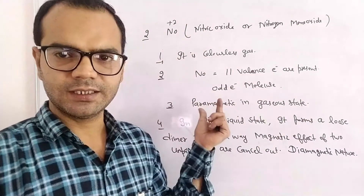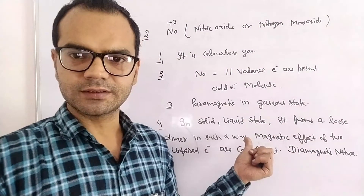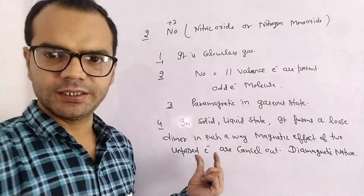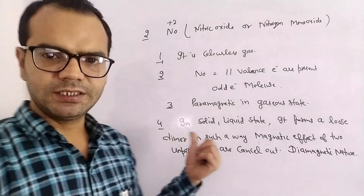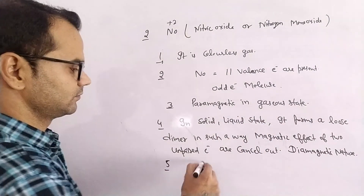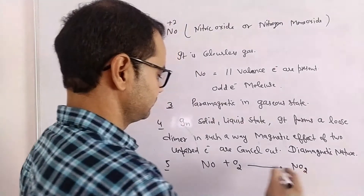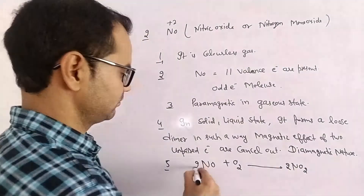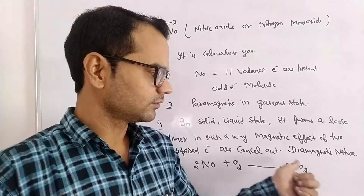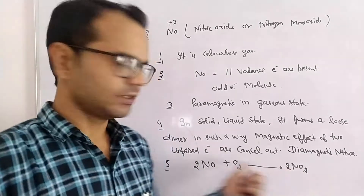So in the gaseous state it is paramagnetic, but in the solid and liquid state it is diamagnetic, because it forms a loose dimer resulting in the cancellation of the magnetic effect of two unpaired electrons. Fifth property: it readily reacts with oxygen to form brown fumes of nitrogen dioxide. NO₂ is a brown colored gas, so brown fumes are observed during the reaction.